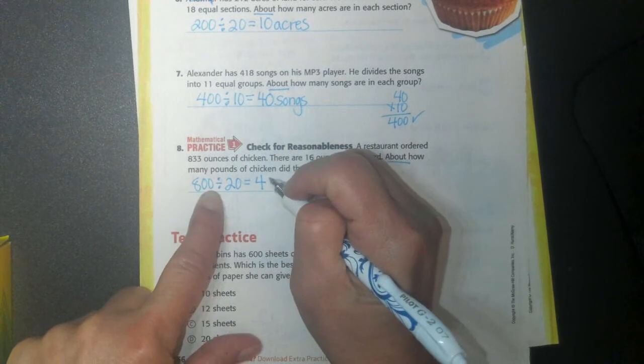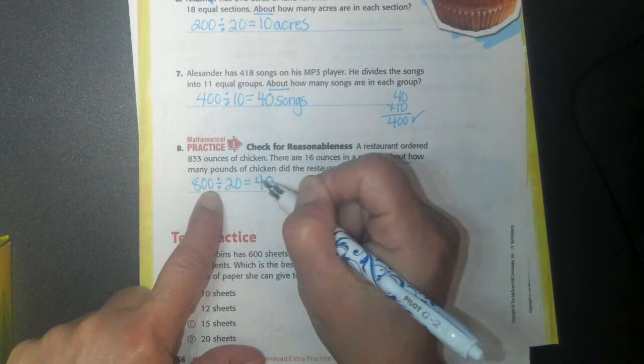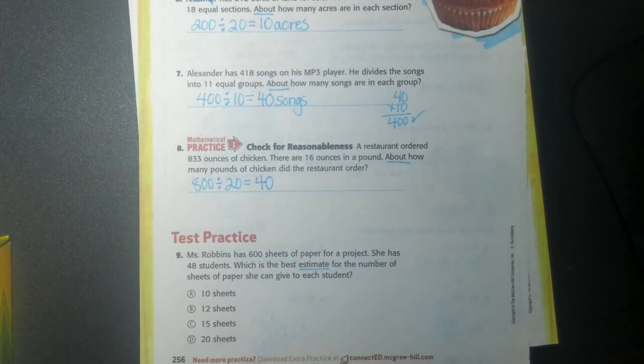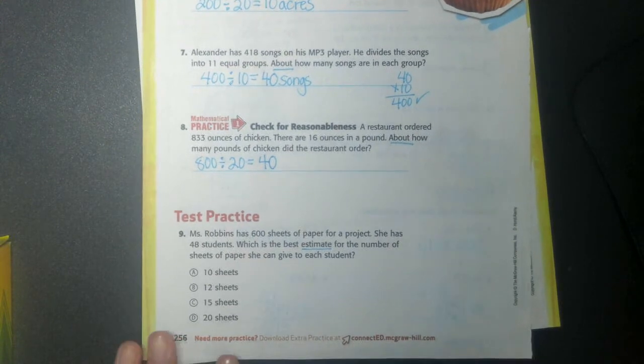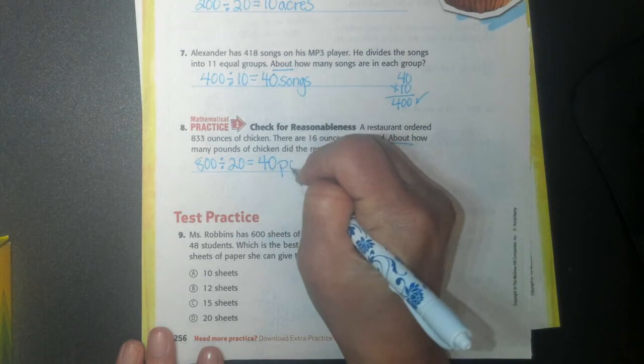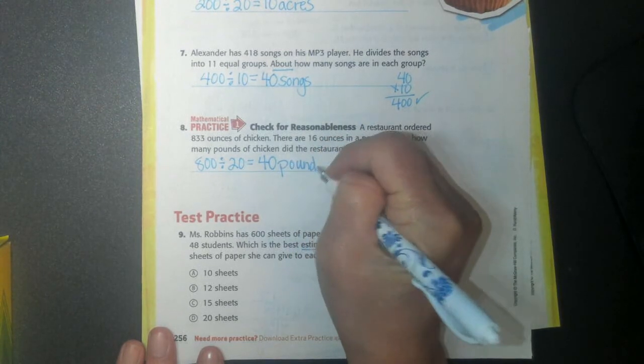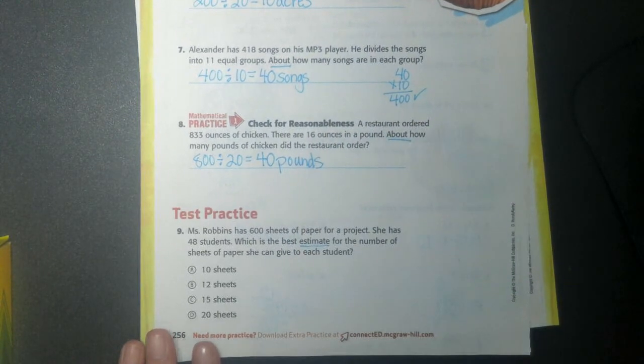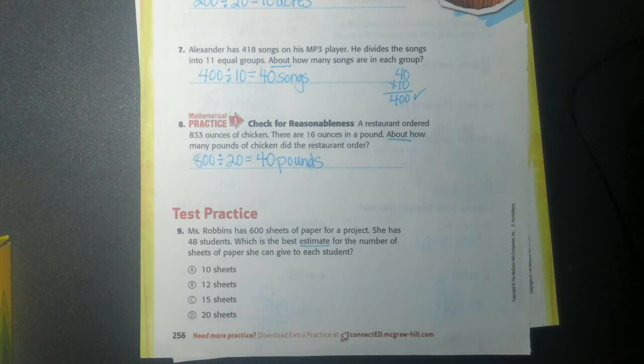But this one has one more 0 than that one. This one has one 0. This one has two. So I do need just one 0 in my answer, not the 2. And so this is going to be how many pounds of chicken? 40 pounds of chicken.